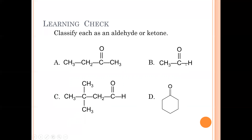Example B has two carbons — technically ethane, drop the E. Because the carbonyl is at the end of the chain and has a hydrogen, this is an aldehyde: ethanal (E-T-H-A-N-A-L). We don't need to note the position because it's always at position one.